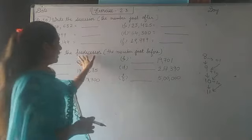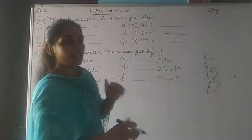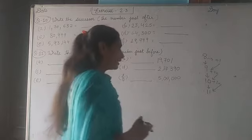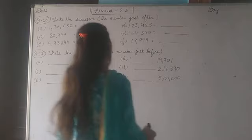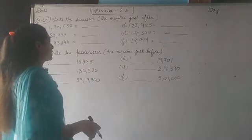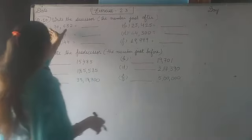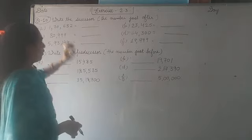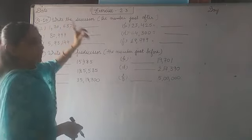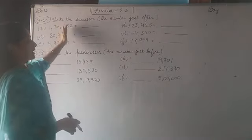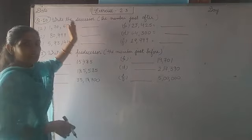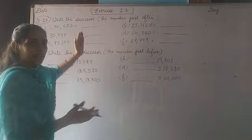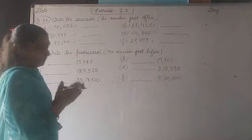Next question is predecessor. Predecessor is the opposite. In predecessor we subtract one. Question 10: Write the successor of the given number. Here big numbers are given. And in big numbers when we add one, the ones place is affected. When one is added, the next number is also affected. The number increases.